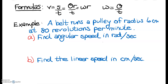It says a belt runs a pulley of radius 6 centimeters at 80 revolutions per minute. So what information did the word problem give us? It gave us that our radius is 6 centimeters. I see the word 'per minute,' meaning I have a rate. Since it gave me 80 revolutions, I know this must be an angular rate because we don't measure distance in revolutions. So angular speed is 80 revolutions every minute.